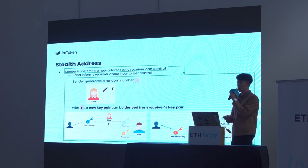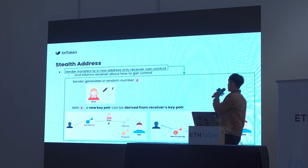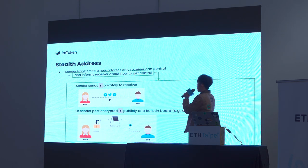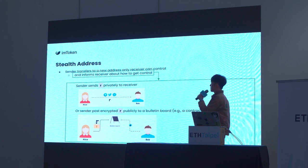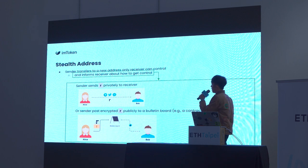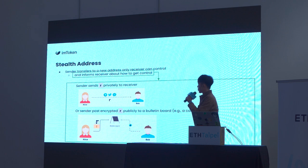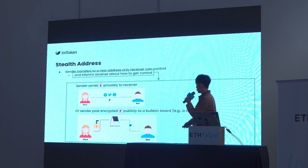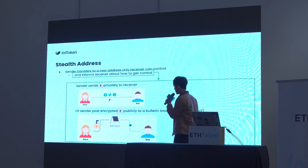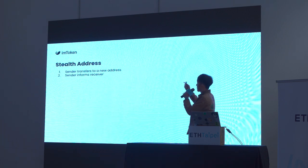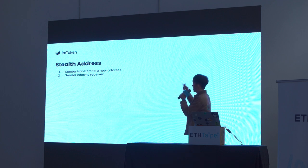That's the core of stealth addresses — it's very simple. Even elliptic curve cryptography we're familiar with can do the trick. After the sender transfers to the new address, the only thing left is to inform the receiver about the random number. The sender can do this either by sending the random number privately to the receiver via Telegram, Twitter, or Messenger, or by encrypting the random number and posting it to a public bulletin board — which can be a smart contract. The receiver periodically checks this bulletin board to see if there's any encrypted random number for them.